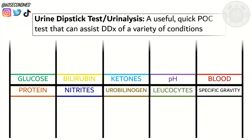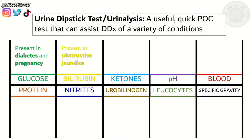The urine dipstick test, or urinalysis, is a common, useful, and quick point-of-care test that assists a variety of differentials. For example, the presence of glucose in the urine can be an indicator of diabetes and is also found in pregnancy. The presence of bilirubin can indicate obstructive jaundice, and the presence of ketones can indicate starvation or diabetic ketoacidosis.